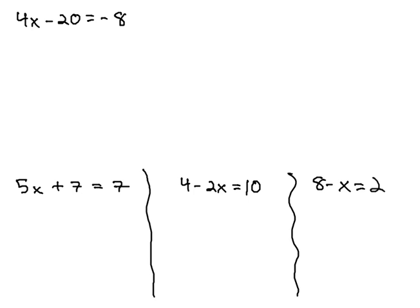In this video, we're going to start taking a look at solving what are called two-step equations. We're trying to find x or get the x alone when there's two things with it. A four is multiplied and a twenty is subtracted.